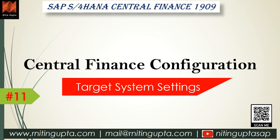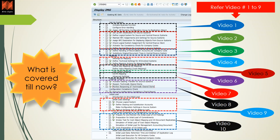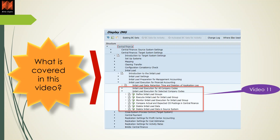This video focuses on central finance target system settings. Videos 1 through 10 have already covered previous configurations, so viewing them in sequence is recommended. Up through video 10 we covered initial load preparation for management accounting, and in this video, video number 11, we will cover initial load execution for financial accounting.